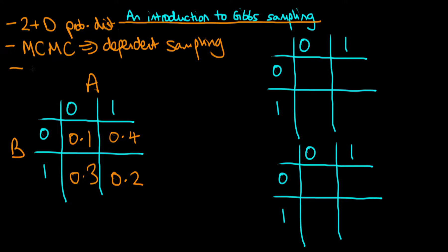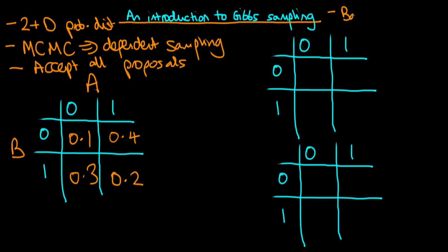However, unlike the Metropolis algorithm, we accept all proposals. Indeed, it is possible to show that the Gibbs sampling algorithm is a special case of the Metropolis algorithm and vice versa. And the Gibbs sampling algorithm is, again, like the Metropolis algorithm, often used in Bayesian inference.